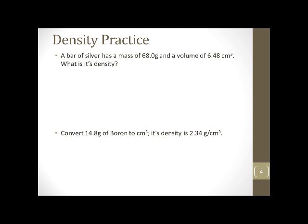A bar of silver has a mass of 68.0 grams and a volume of 6.48 cubic centimeters. What is its density? Try it on your own, hit pause, try it on your own, and then come back and check and see how you do. Let's see how you did. So first thing we do is write the formula D = M/V. And we're going to write down what we know.